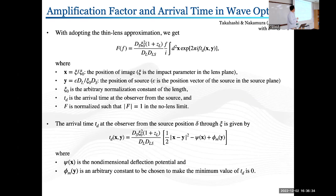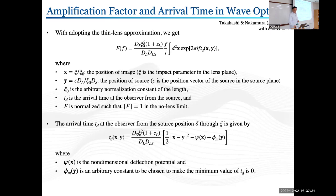As mentioned, adopting the thin lens approximation, we get big F in this form, where vector X means the position of images on the lens plane, and Y means the position of the source on the source plane. Here, this quantity is an arbitrary normalization constant of the length, and Td means the arrival time at the observer from the source. Td appears in the exponent, and the arrival time is written as: it contains psi, the non-dimensional deflection potential depending on the mass and gravity of the lens system, and phi is some arbitrary constant chosen to make the minimum value of Td equal to zero.